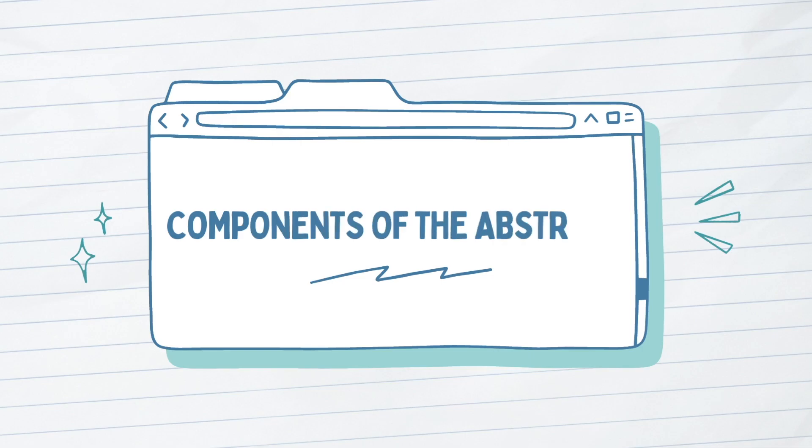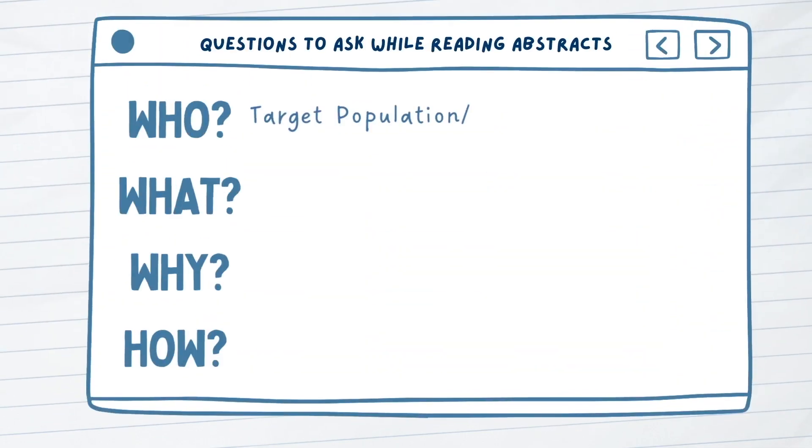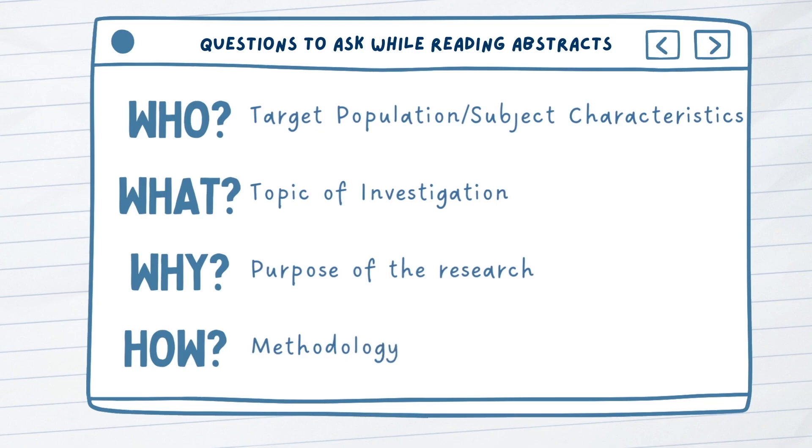To get a more detailed summary of what the paper is, we have to turn to the abstract. Similar to the title, the abstract provides key information about who, what, why, and how the research was conducted. This even more detailed synopsis of the publication is designed to provide readers with a complete and concise understanding of the article.